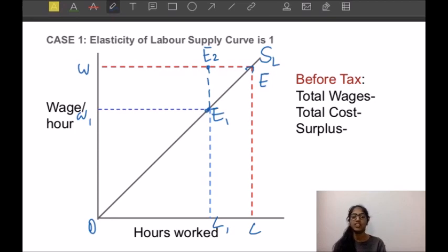Before the imposition of the tax the total wages were OLEW. And we know that the supply curve also shows the marginal cost curve. That is the cost of the leisure time that he had to forgo and had to work. So this area under the supply curve shows the cost that he has to bear in terms of leisure foregone. So the total cost is OLE. The surplus, that is the total wages minus cost, is equal to area OEW. Hence before the imposition of tax, the surplus was the area OEW.